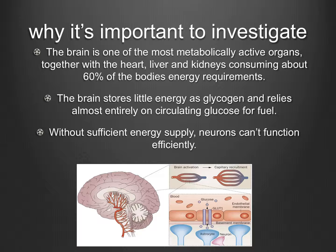Together with the heart, liver, and kidneys, the brain consumes about 60% of the body's energy requirements. The brain stores little energy as glycogen and relies almost entirely on circulating glucose for fuel. Without sufficient energy supply, neurons can't function efficiently.